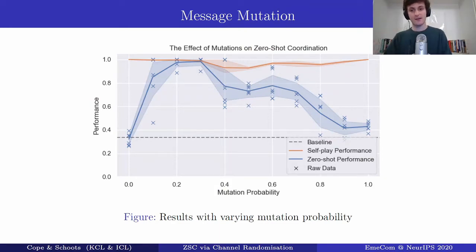Now how does this affect zero-shot performance? The blue line here is the zero-shot performance and as you can see with no mutation probability we have a performance equivalent to the baseline and then it increases up until about 0.3 and then after which it starts to decrease again.